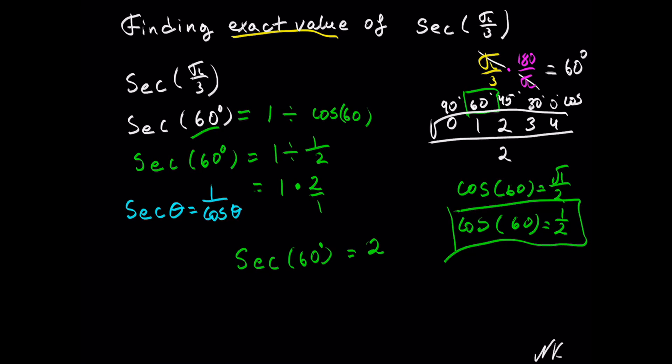So secant of pi over 3 is equal to 2, since pi over 3 is the measure of 60 degrees in radians. That's all.